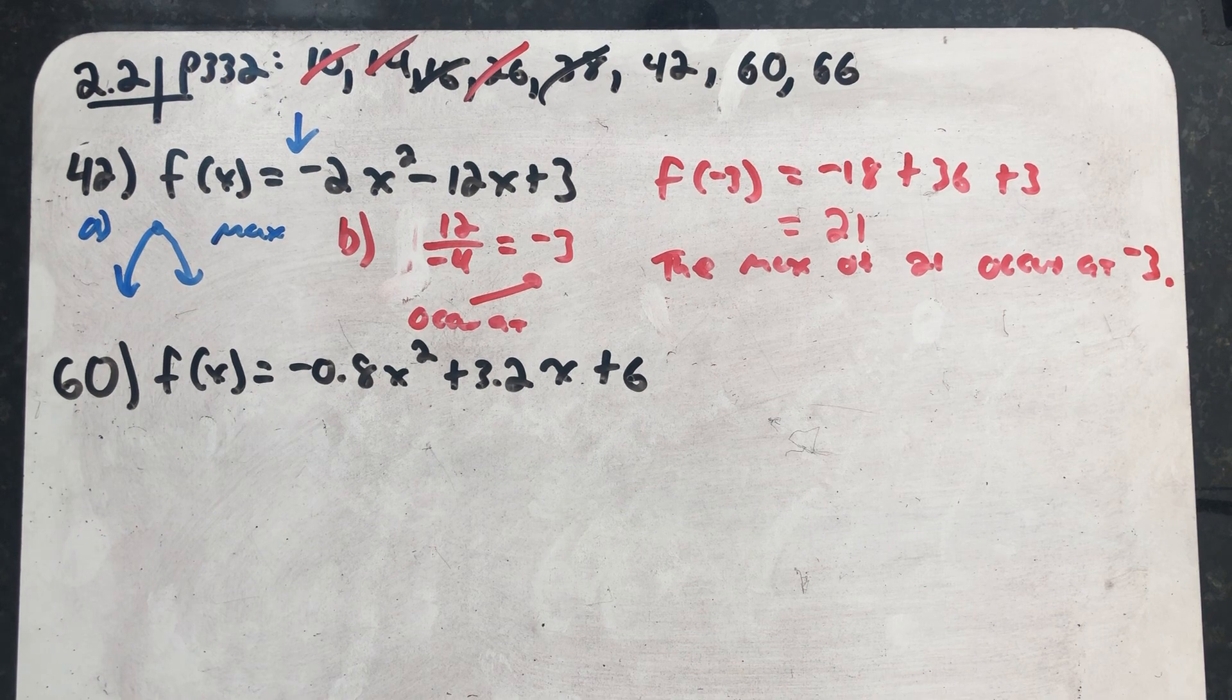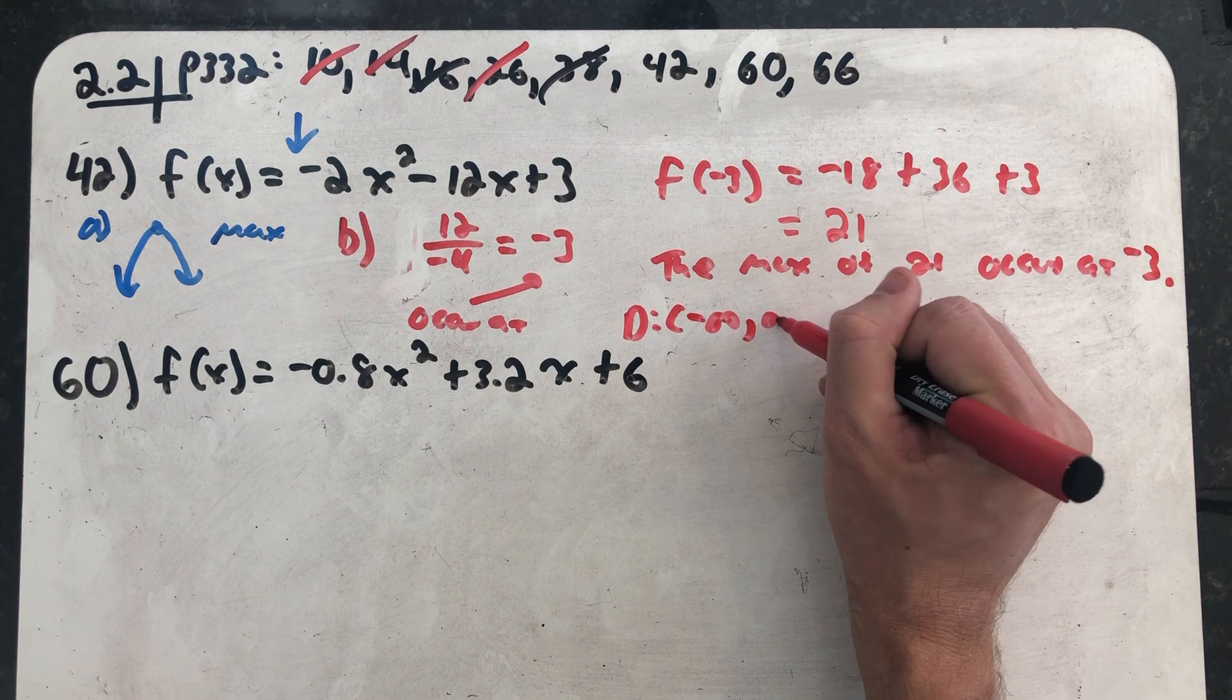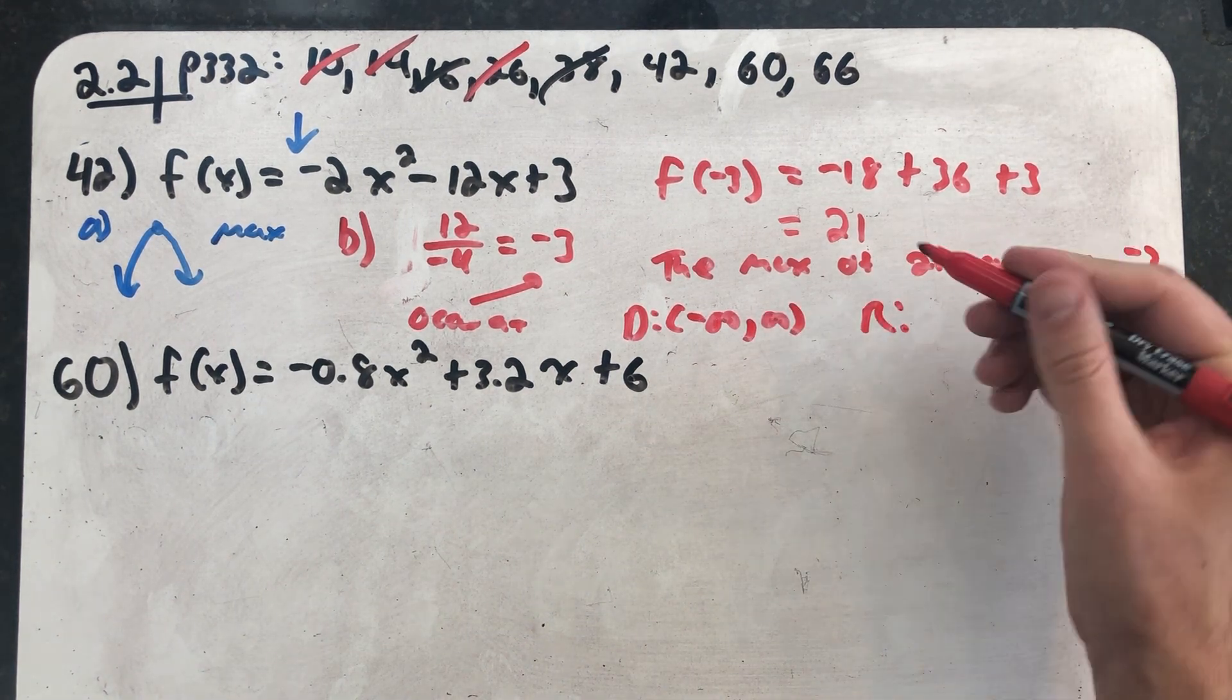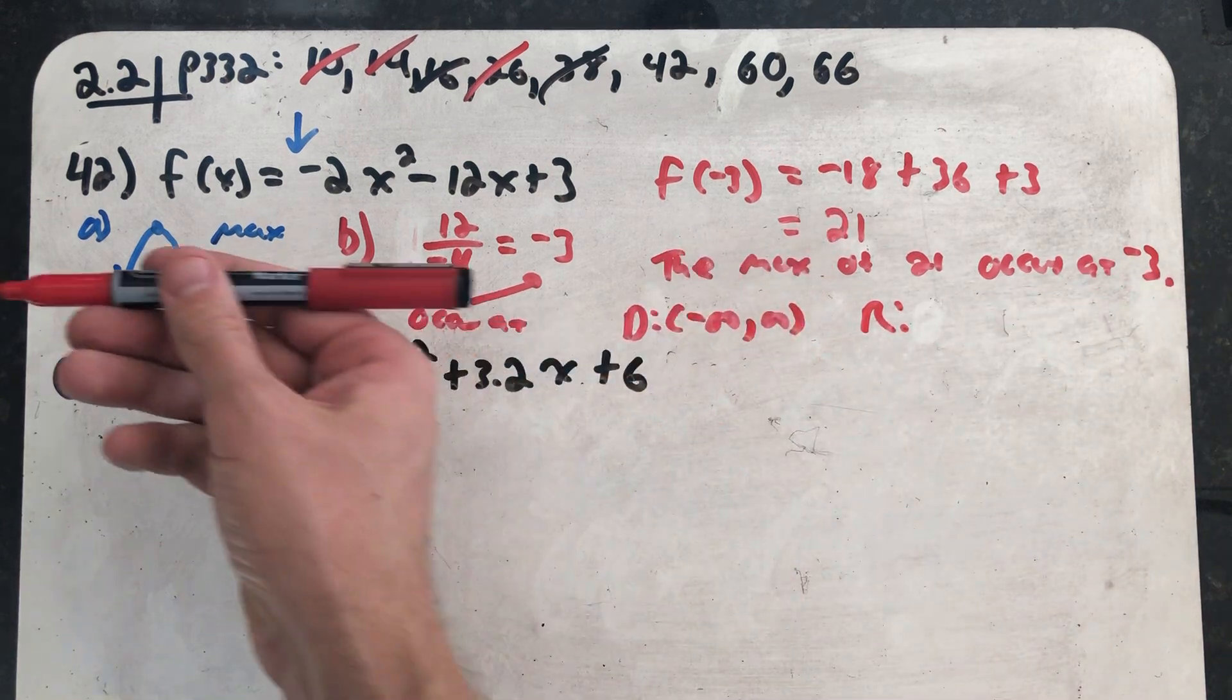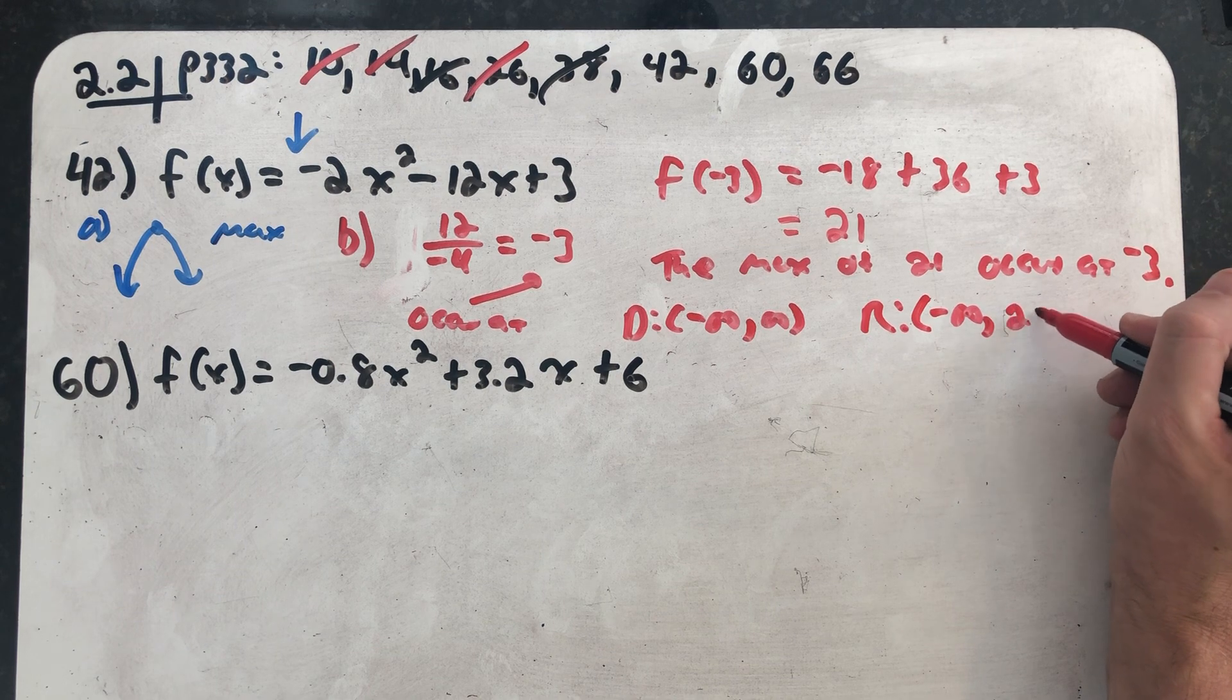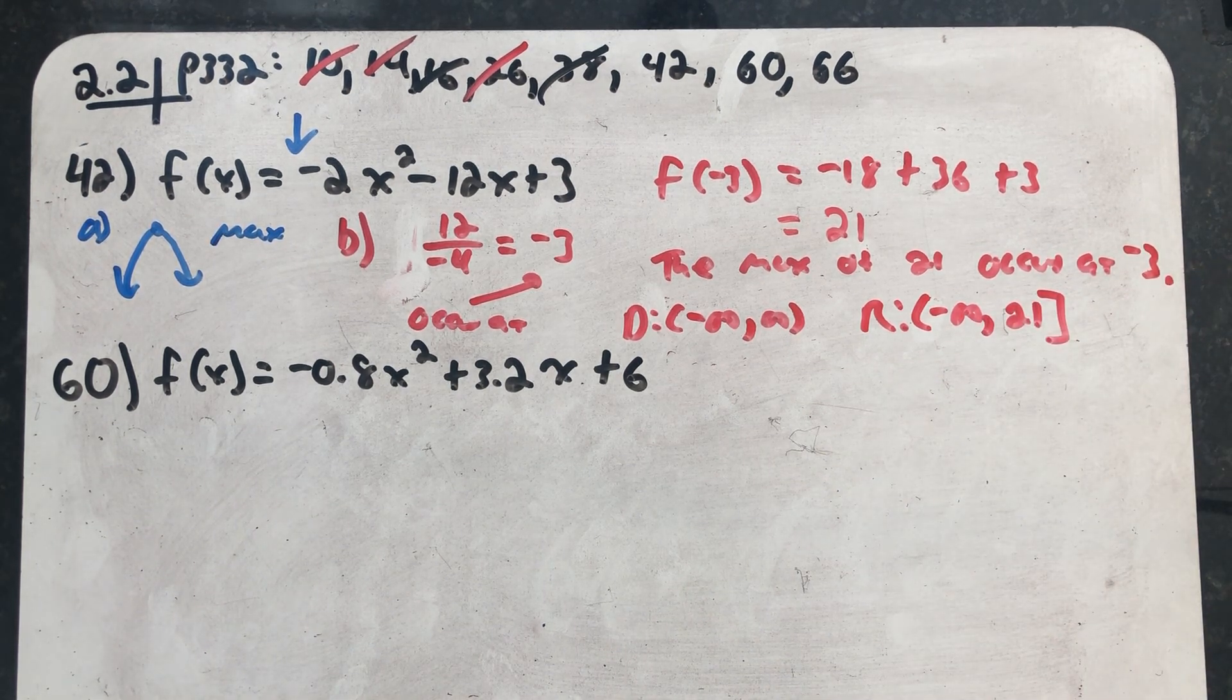State the domain and range. Well, it's quadratic, so the domain's everything, all real numbers, from minus infinity to positive infinity. The range, well, that's a maximum value, so from minus infinity and ending at 21. There's my nice happy domain and range.